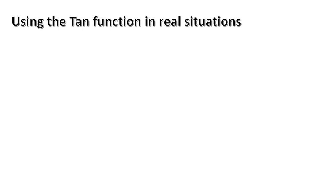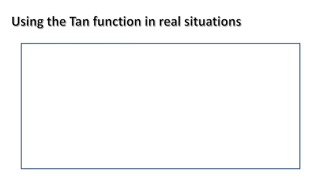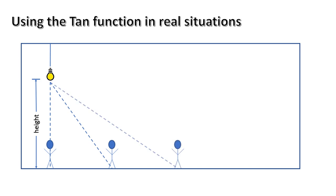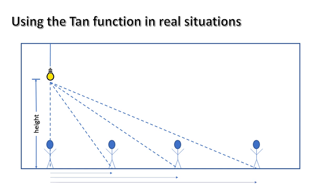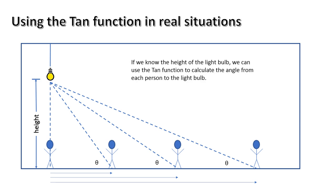Using the tangent function in real situations. Let's imagine we have a large room or building with a light bulb hanging down from the ceiling, and we know the height of that light bulb. We put people at various distances along the floor. As long as we know those distances from directly beneath the light bulb, we can calculate the angles. This is used all the time in architecture to calculate angles — very, very accurately, simply using the tangent function.